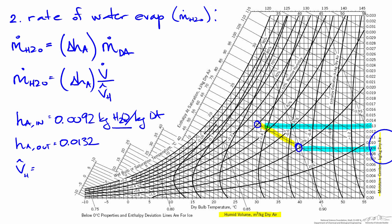The last thing we need is the humid volume, and specifically we need the humid volume at the inlet condition because that's where we know the volumetric flow rate of humid air that's entering the spray chamber. We know the volumetric flow rate is 100 meters cubed per hour. So if we start at the initial condition and follow the humid volume line, which are the steep diagonal curves, the humid volume is found below the x-axis, and in this case we're right on the humid volume line of 0.9 meters cubed per kilogram.